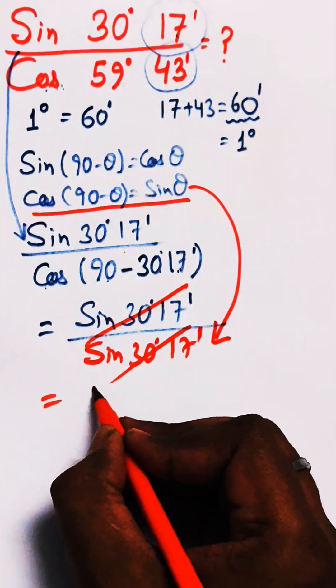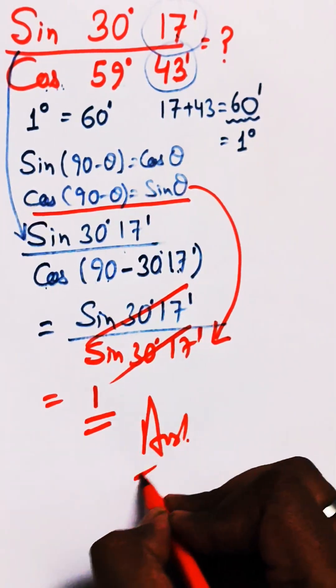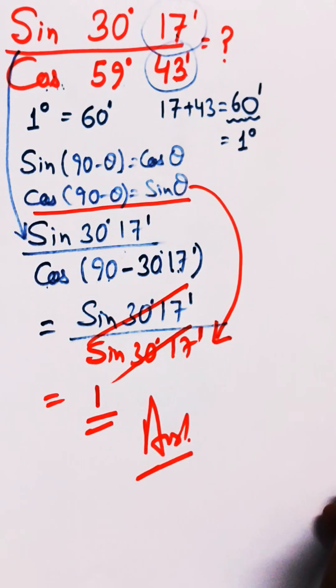Now both numerator and denominator cancel, and the answer is 1. This is your answer. In this way we have solved this question.